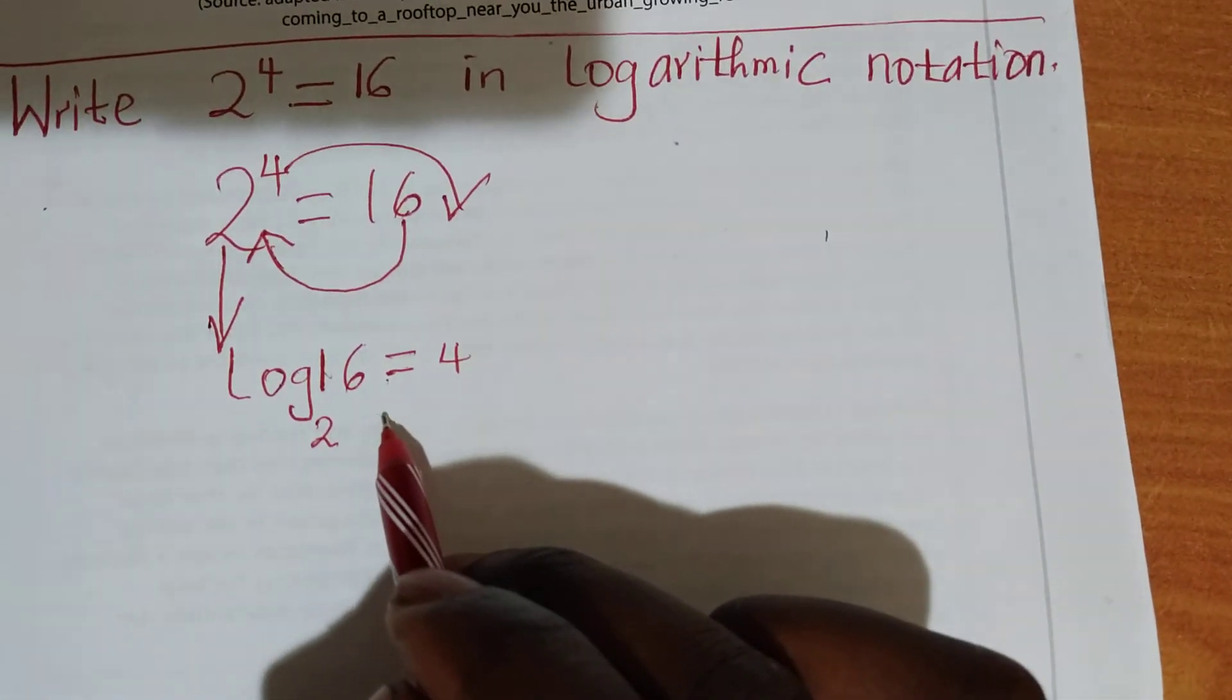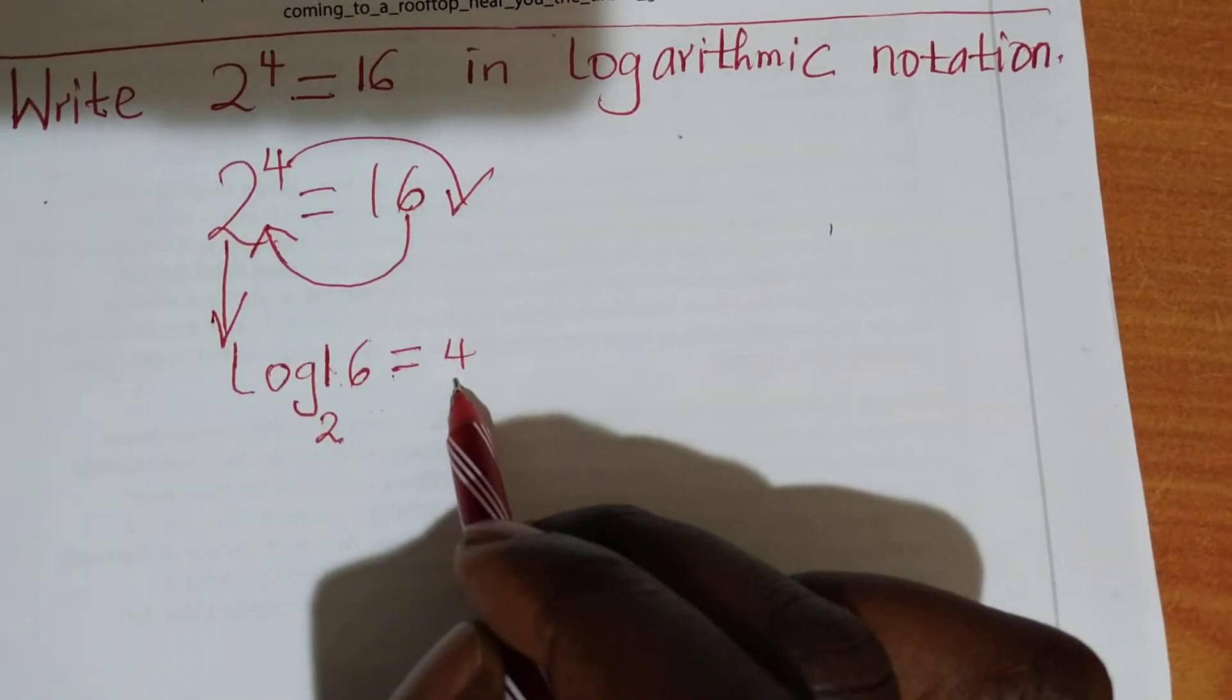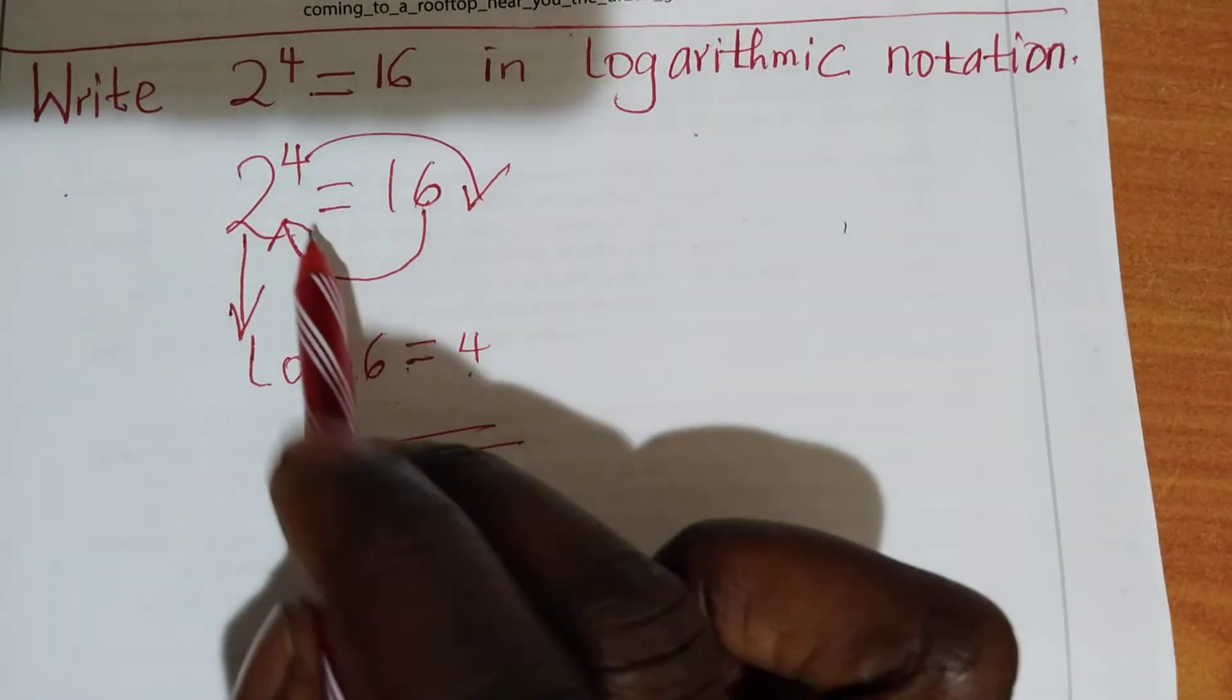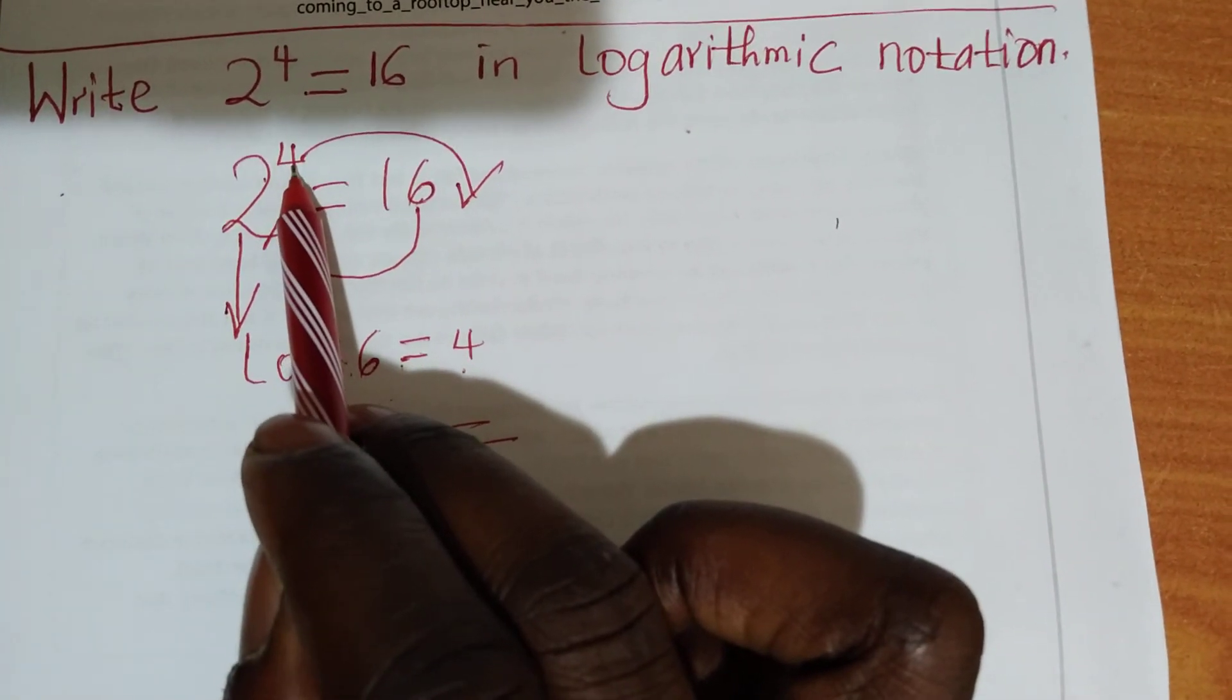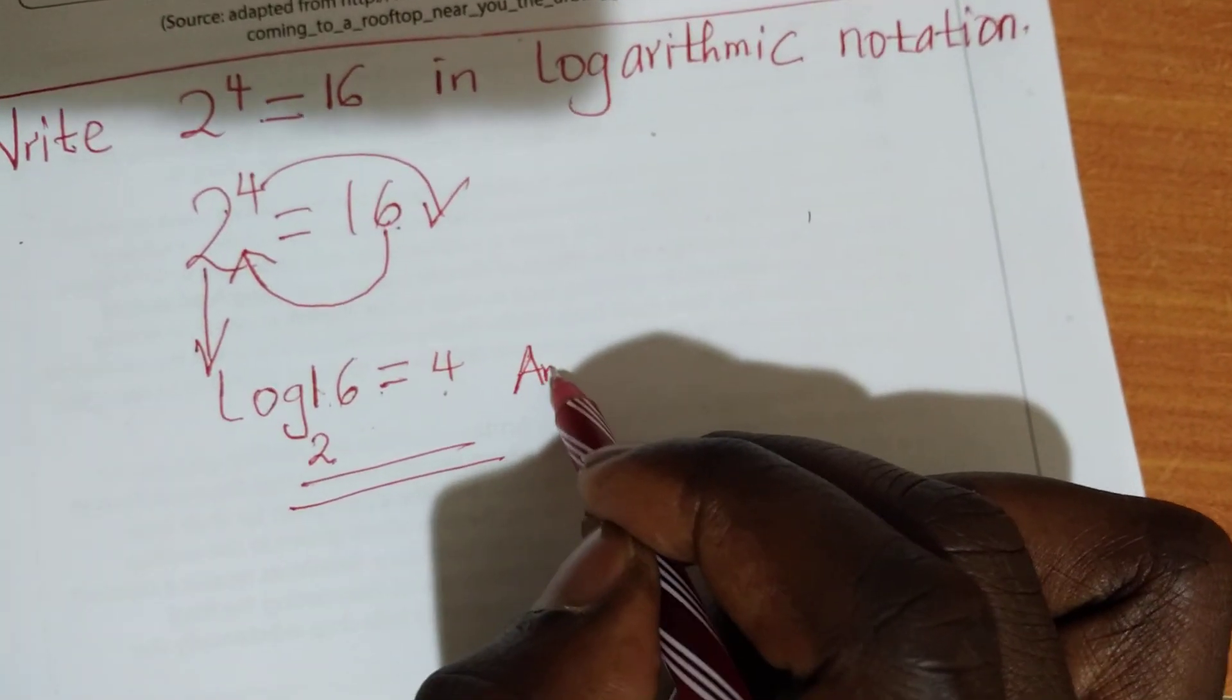Now, this one is read as log 16 to the base of 2 is equal to 4. This is the logarithmic notation of 2 raised to power 4 is equal to 16. Therefore, this becomes your answer.